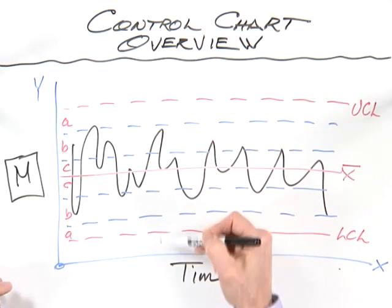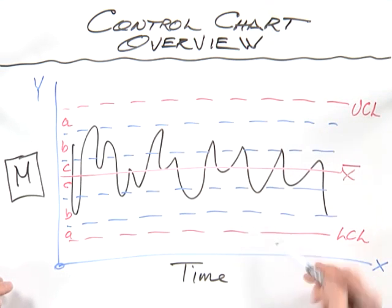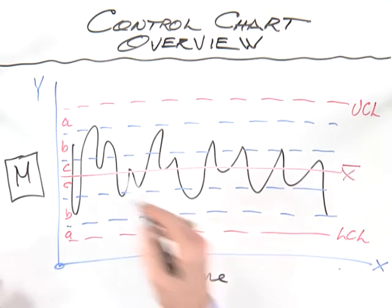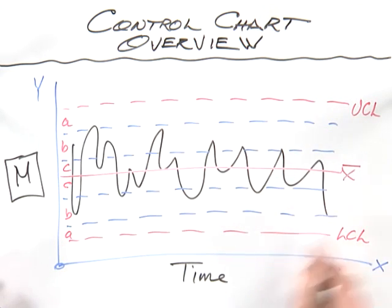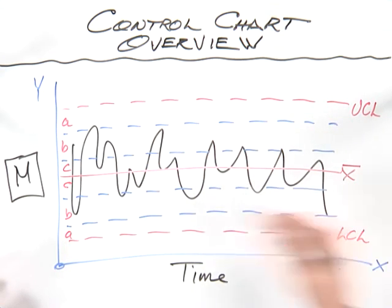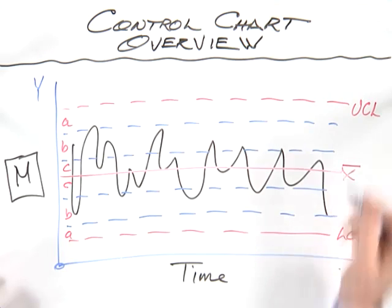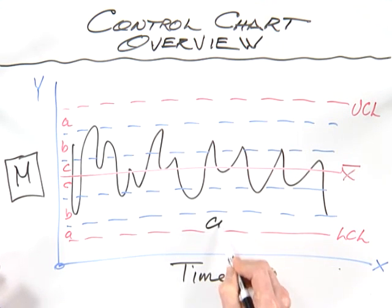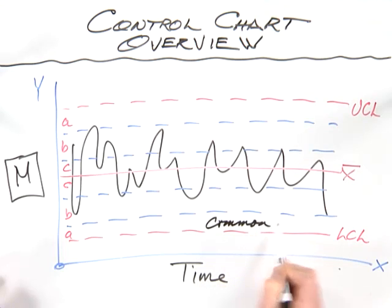Typically data that vacillate between the upper and lower control limits is common cause variation. But there are ways to detect if you have special patterns in the data. When we look at data that's up, down, back and forth between the upper and lower control limits, that's a classic demonstration of common cause variation.